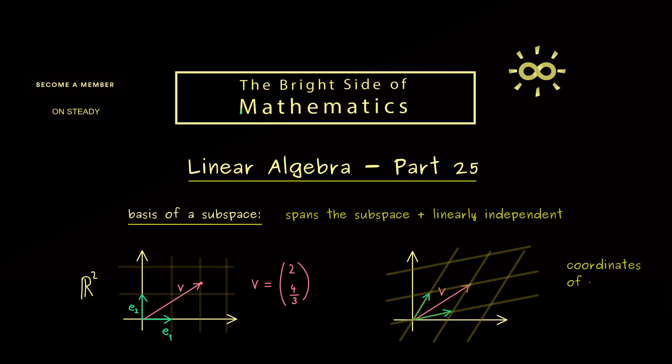So for example here for the vector v we have two new coordinates. And you see it's simply 1, 1. So we just have to go one step into the direction of the first basis vector and then one step into the direction of the second basis vector. So you immediately see the numbers are much simpler than the coordinates with respect to the standard basis.